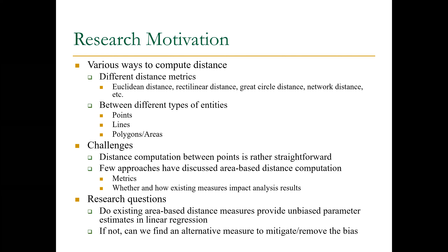For this research, we have two research questions. The first question is: do existing area-based distance measures provide unbiased parameter estimates in linear regression? That's our first research question. Second, if the answer is no, can we find an alternative measure to mitigate or remove the bias?